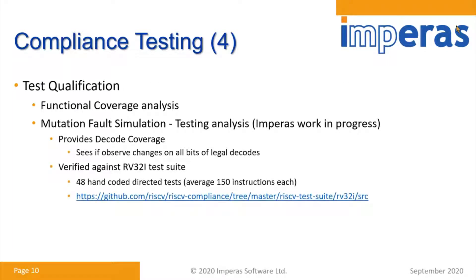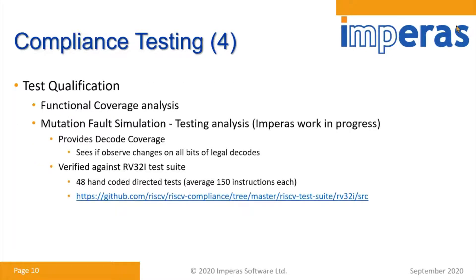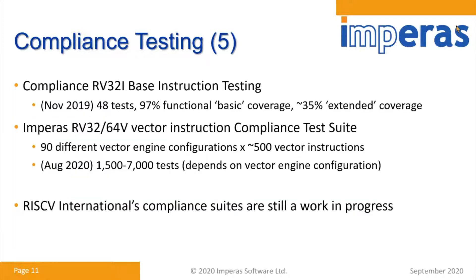That's not DV. We've run this against, for example, the 32i test suite, where there are 48 hand-coded tests. We found there were a lot of tests that actually didn't propagate some of the values, so we had to improve on those. And you can have a look at the quality of the current RISC-V test suite.